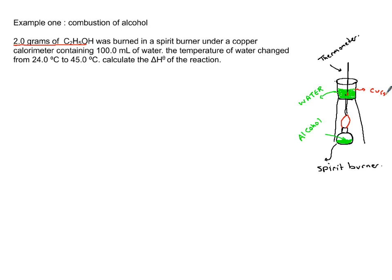Your calorimeter is made out of copper, and inside the copper we have 100 milliliters of water. Its temperature changed from 24 degrees Celsius to 45 degrees Celsius. Few things you should jot down: the temperature increased, which means heat is being released, so this indicates the reaction is exothermic and delta H will have a negative sign.